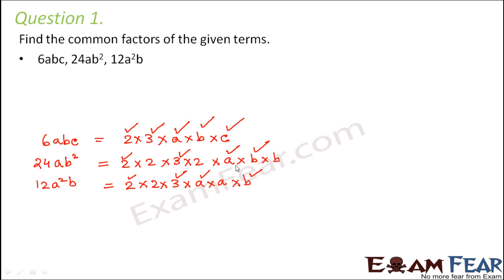And c, is it there? Well, c is not there in all of them. So now if you list down the common factors, which are the ones? 2, 3, a and b. So these are the common factors.